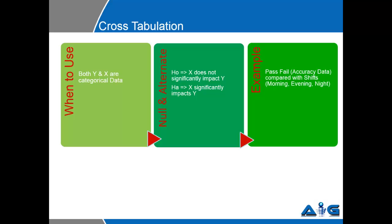For example, if we have accuracy scores in form of pass and fail accuracy data compared with shifts, namely morning, evening, and night shift, cross tabulation test can be applied.